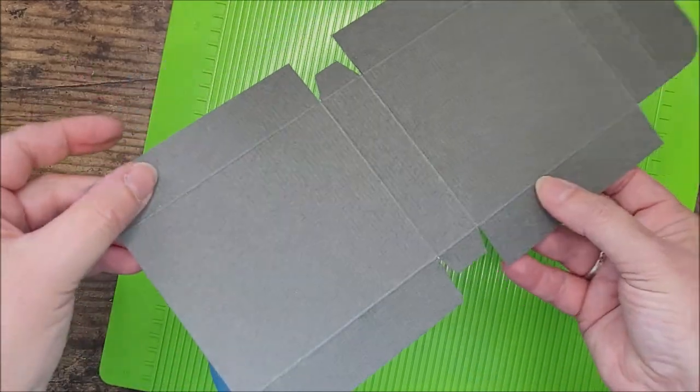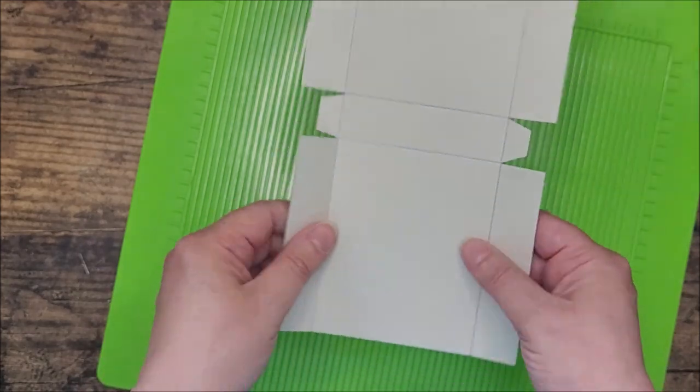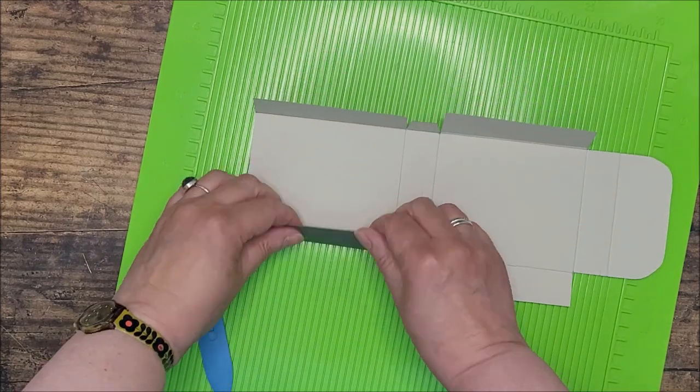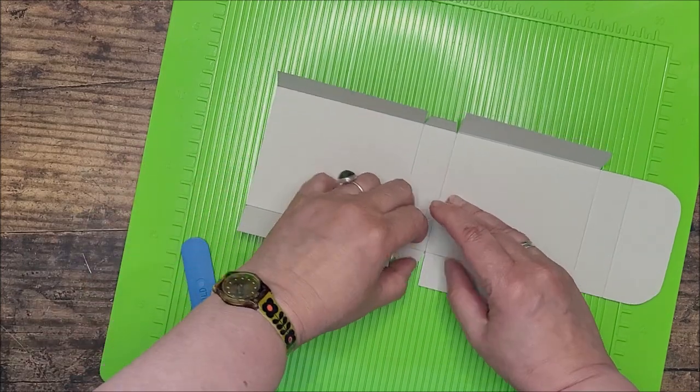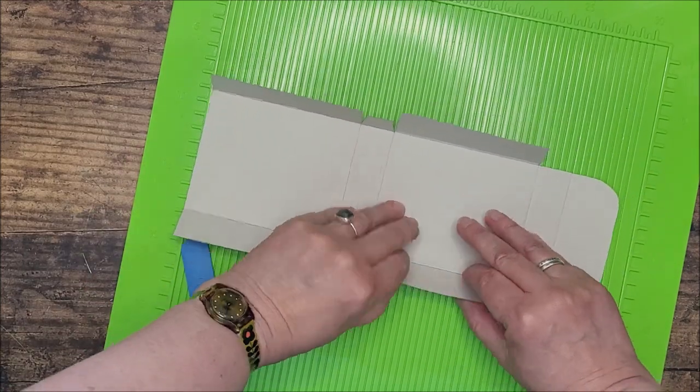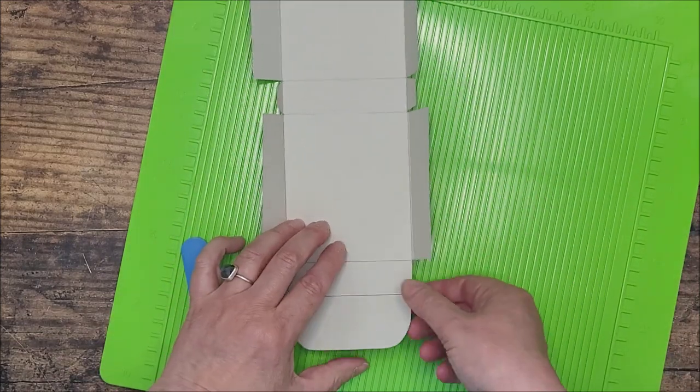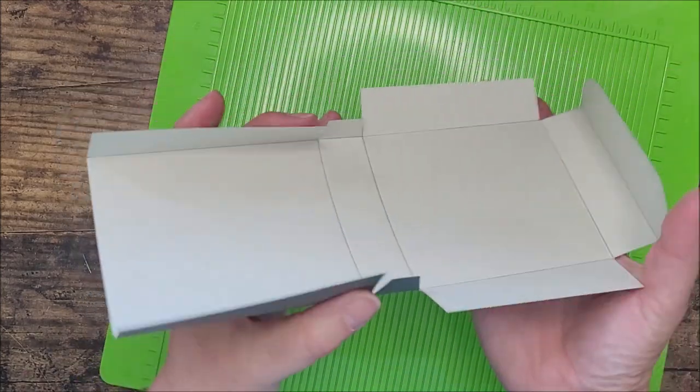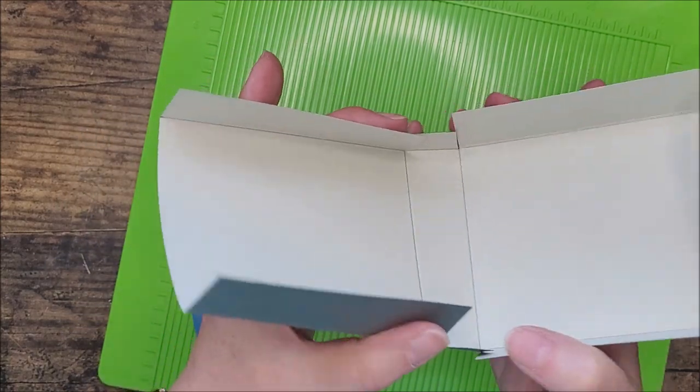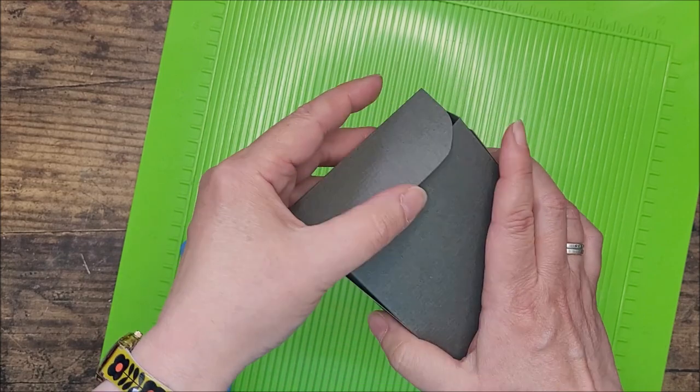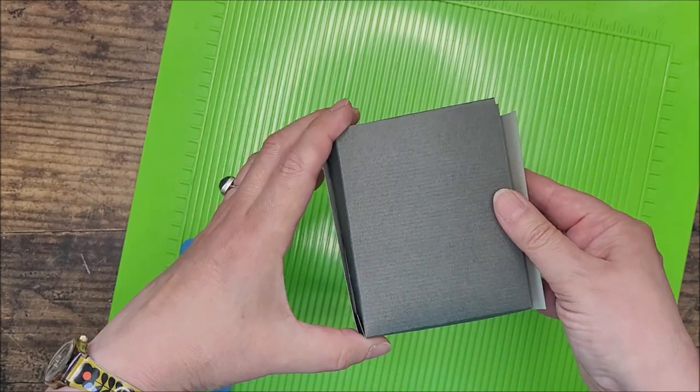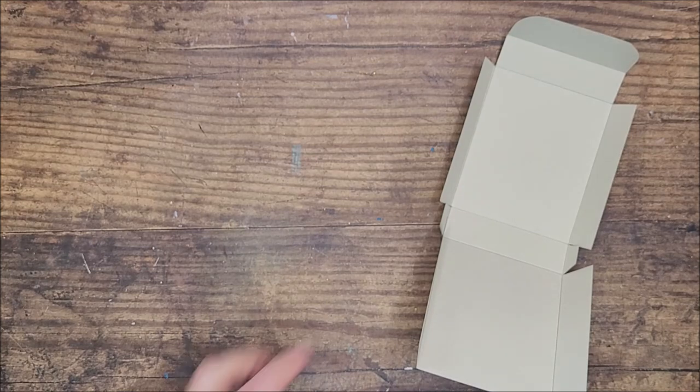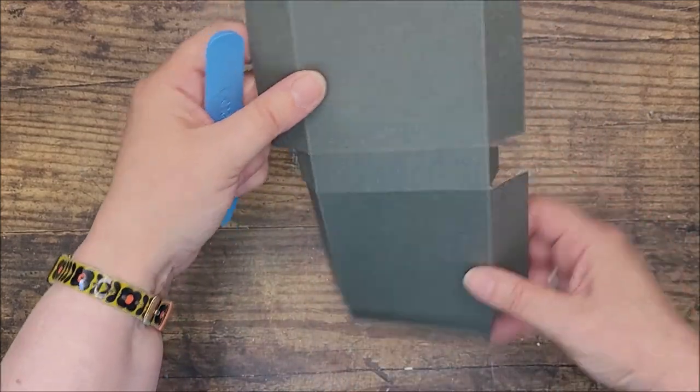You might be able to see better now. I've got a nice crease marked so that I can now fold all these panels ready to assemble. When it's all folded up, that will be the basic shape of my little box. So I can move the scoreboard away now.